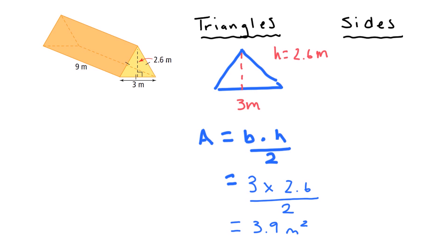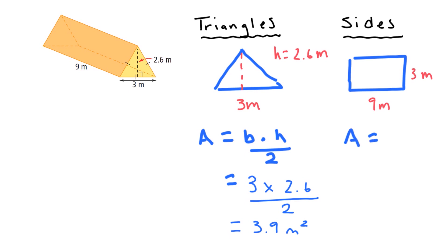Now I want to deal with the rectangles. This time all three sides are identical so I only have to do the calculation once — but sometimes you'll get two that are identical and one that's a little bit different, so you'd have to do two separate calculations. Here is my rectangle: the length is nine meters and the width is three meters. The formula for area of a rectangle is area equals length times width, so nine times three is 27 meters squared.